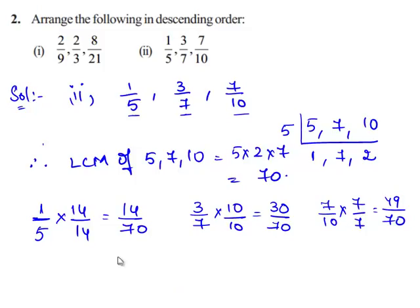So we have the equivalent fractions: 14/70, 30/70, and 49/70. All the rational numbers have a common denominator. Therefore, we can directly compare their numerators.